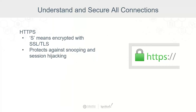Obviously, with applications that we're accessing from a client, we want to leverage HTTPS. The S means that it's encrypted through SSL or TLS. The encryption protects from snooping and session hijacking. When you don't see that lock, it means your connection is not secure and you absolutely should not be putting critical information into the system. Going to our banks, we don't want to put our credit card into an unsecure site.